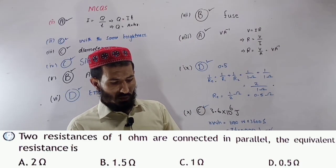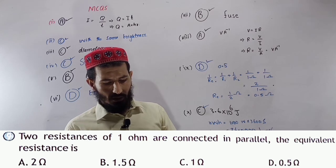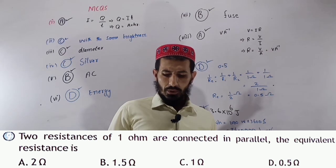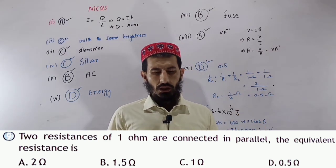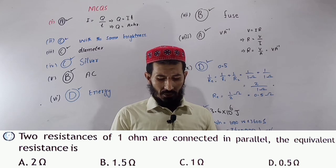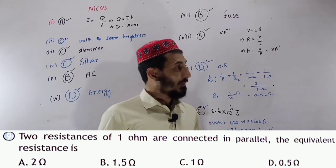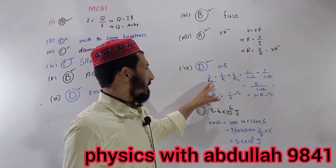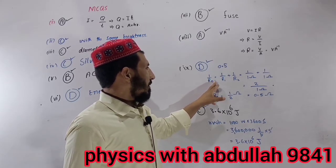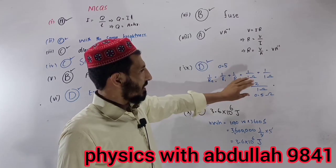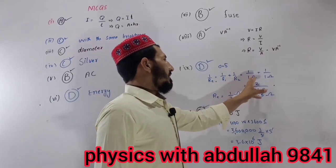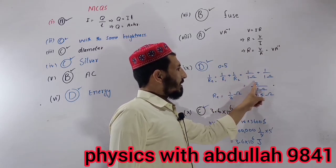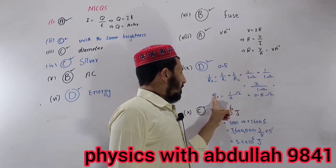Two resistors of 1 ohm each are connected in parallel, the equivalent resistance is 0.5 ohm. The formula is 1 over R equivalent equals 1 over R1 plus 1 over R2. So 1 over R equivalent equals 1 over 1 ohm plus 1 over 1 ohm equals 2 over 1 ohm, therefore R equivalent equals 0.5 ohm. Answer is option D.